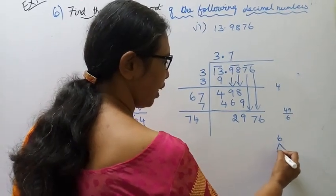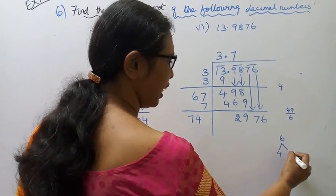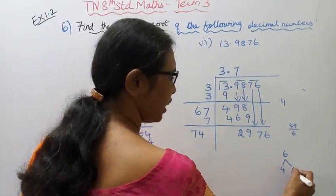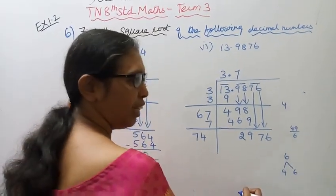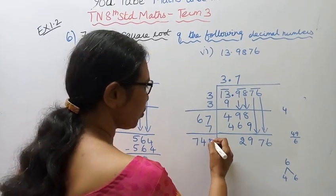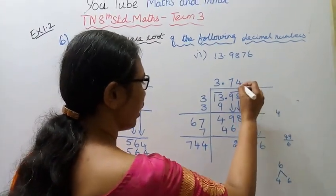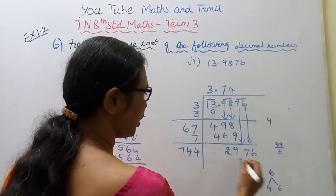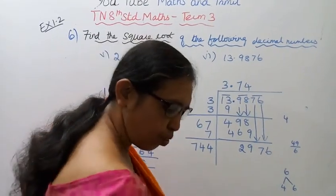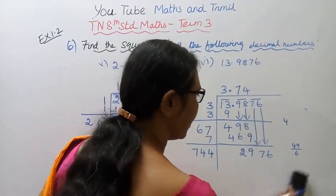6 squared is 4, 4 gives 16. Then 6, and 6 squared is 36. We will use 4: 4 fours are 16.